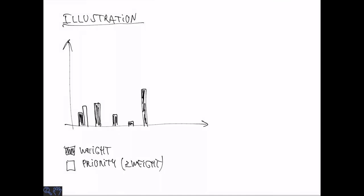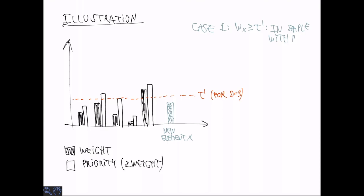So suppose this is the weight distribution. Now the priorities are given by dividing by a number that is less than 1. So the priorities will be greater, sometimes much bigger, sometimes just a little bit bigger. Let's define a value tau prime, which is the s-th highest priority. And let's look at a new element x. So tau prime is the third highest priority in this example among other elements than x. Now there are two cases to consider. First, if wx is greater than or equal to tau prime, then it doesn't matter what alpha x is. x will end up in the sample with probability 1.